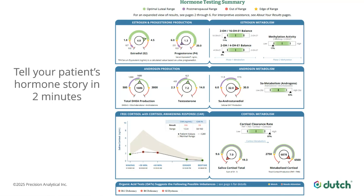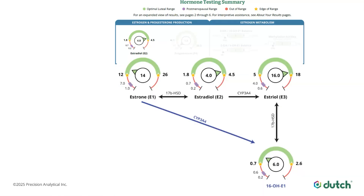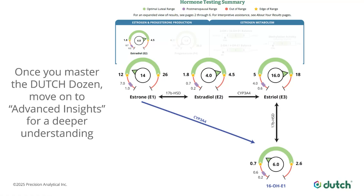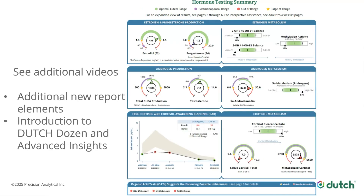Some of you are already thinking beyond estradiol — you want to know about estrone and 16-hydroxyestrone on the next pages. We've got you covered with advanced insights. We're going to walk you through the Dutch Dozen — the 12 key elements — and then have a second list of comments that go deeper through those same 12 elements. For estradiol, for example, looking at the impact of E1 and 16-hydroxy-E1, which are also estrogenic metabolites. For each element, we'll provide a deeper look at things you can become expert in over time.